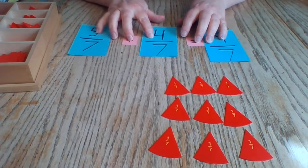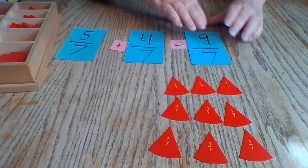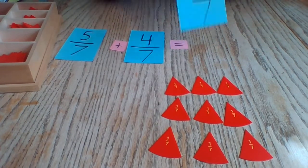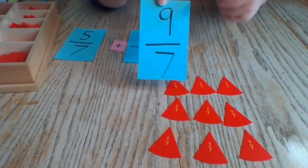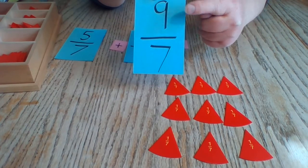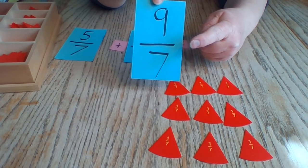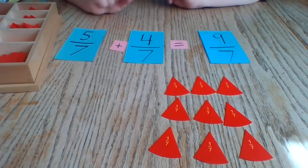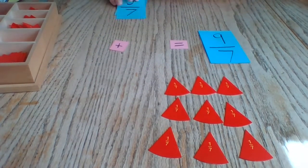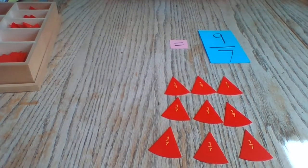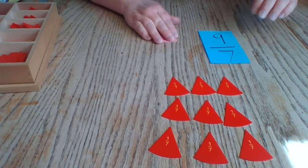We get an improper fraction. Nine-sevenths is an improper fraction because the numerator is bigger than the denominator. So that means that we can turn it into a mixed number.